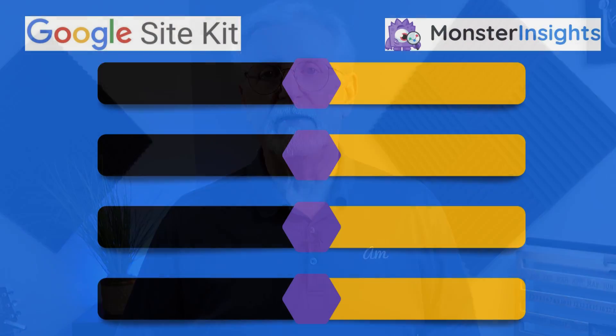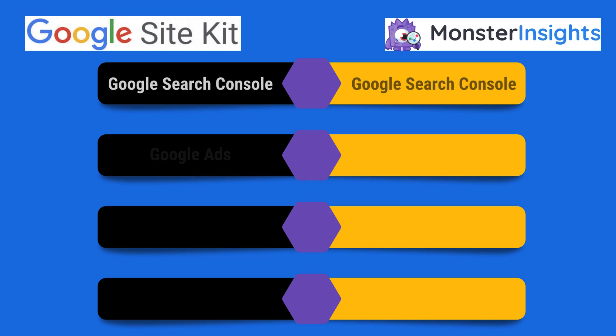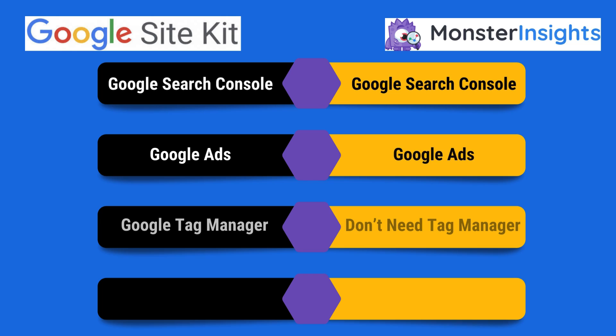First, let's talk about what tools and other plugins that these two analytic plugins can connect with. Both plugins can connect with a Google Search Console property to bring some of your keyword data into your WordPress dashboard. And both will allow you to connect with your Google Ads so you can track conversions. Google Site Kit can also install your Google Tag Manager code for you. Monster Insights doesn't have that feature because most people find they don't really need Google Tag Manager when using Monster Insights, since it tracks so many of the events you'd use Tag Manager for.